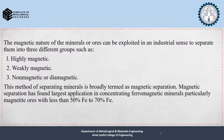Some magnets exhibit strong attractive and repulsive forces while others have weak forces — this also applies to minerals. The magnetic nature of minerals or ores can be exploited industrially to separate them into three groups: highly magnetic, weakly magnetic, and non-magnetic or diamagnetic. This method is termed magnetic separation, and it has found its largest application in concentrating ferromagnetic minerals, particularly magnetite ores, from less than 50% iron to 70% iron.